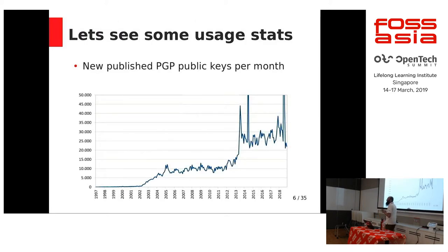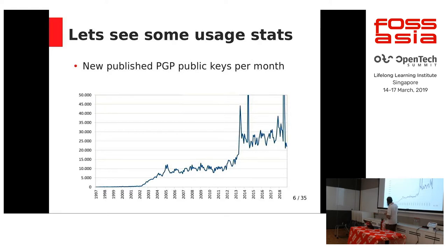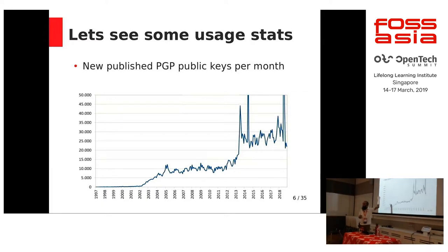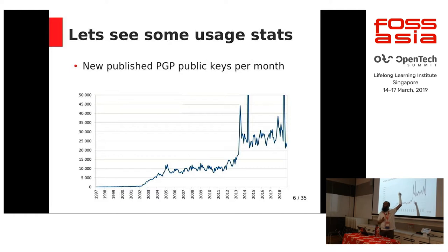How many PGP keys are there on the internet? Last time someone checked there were about 300 million GPG keys generated. Looking at the graph, in 1997 when the technology became slightly famous there were very few PGP keys, going up to 2004. In 2014 there is a sudden spike in the number of people creating PGP keys — and the reason for that spike is Snowden.